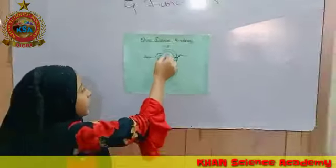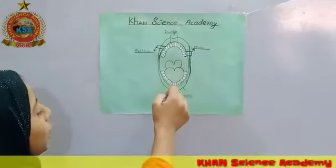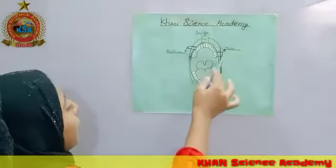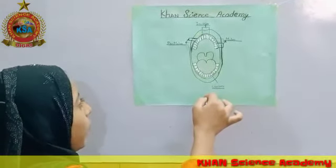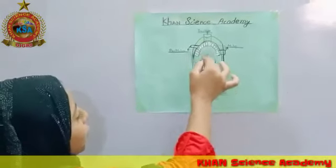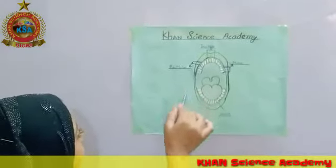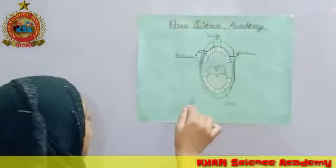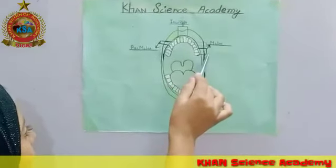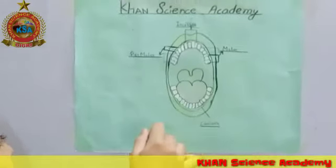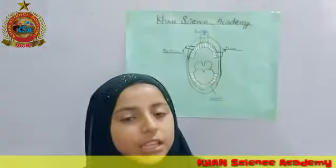We have 4 incisors upper and 4 incisors lower. We have 2 canines lower and 2 canines upper. We have premolars: 4 upper side and 4 lower side. We have molars: 6 upper side and 6 lower side. Now let me tell you the functions of teeth.